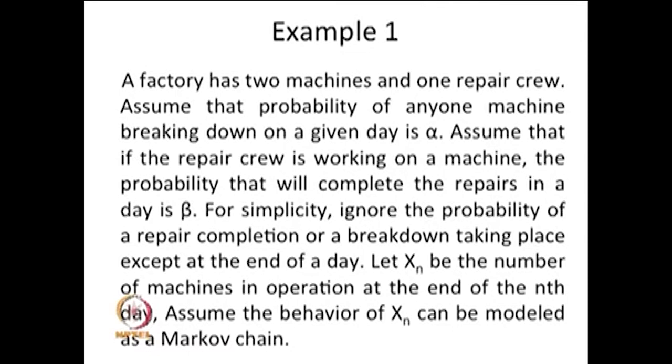Let Xn be the number of machines in operation at the end of the nth day. Assume that the behaviour of Xn can be modelled as a Markov chain. Based on the information available, a machine can break down, and we have only one repair person. The probability that the crew completes a repair in a day is beta, and 1 minus beta is the probability that they cannot complete the repair in a day.